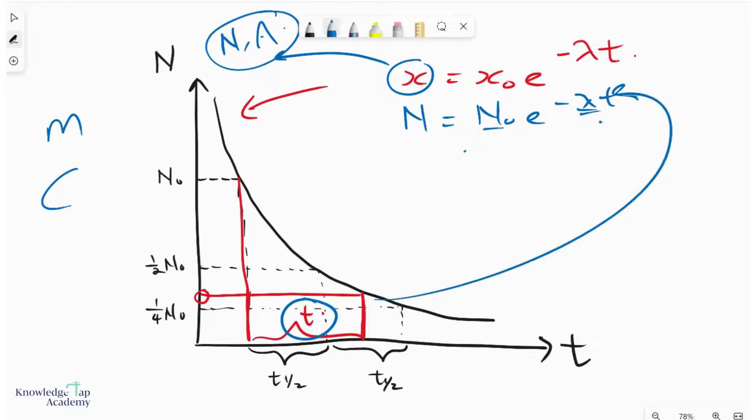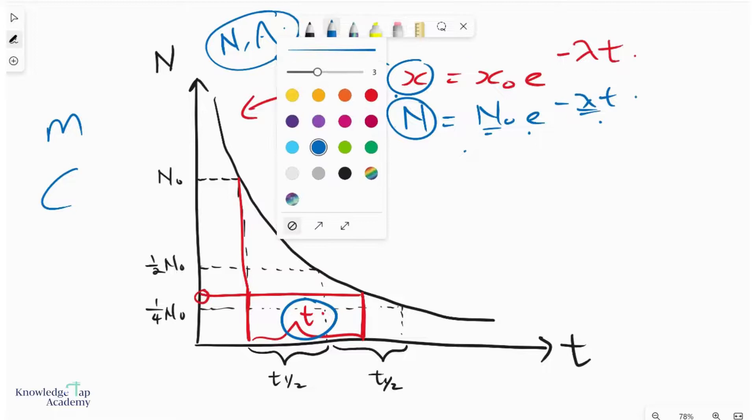So simply substitute this value of t inside here. Knowing the lambda, knowing N₀, you can figure out what N is going to be. And so a simple application of this equation, we can find an expression for the half-life.